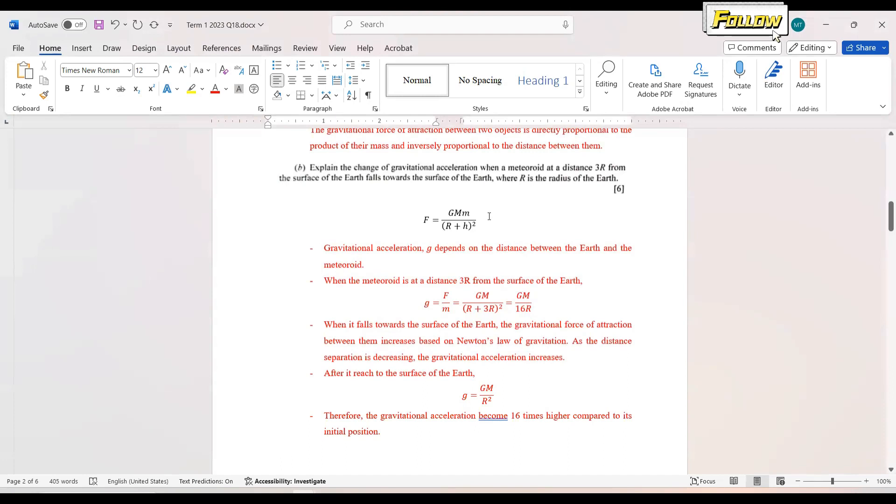From the definition of Newton's law of gravitation, we have the force is equal to GMm over square of the distance, where the distance is equal to the radius of the Earth plus the distance from the surface of the Earth. So first point, maybe we can discuss that the gravitational acceleration depends on the distance between the Earth and the meteorite. We know that the formula for g is F over m, which is equal to GM over r squared.